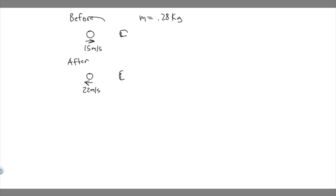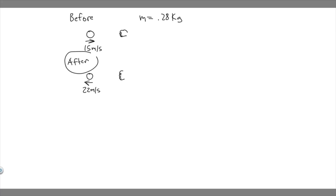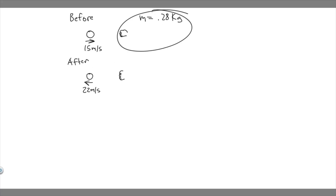So imagine this is what's going on. We have this volleyball traveling — it's going to hit this fist. In the beginning it's traveling at 15 meters per second, and then after it's hit, it's going to be traveling 22 meters per second but in the opposite direction. We also know its mass is 0.28 kg.